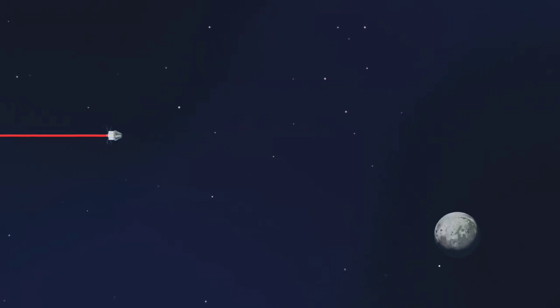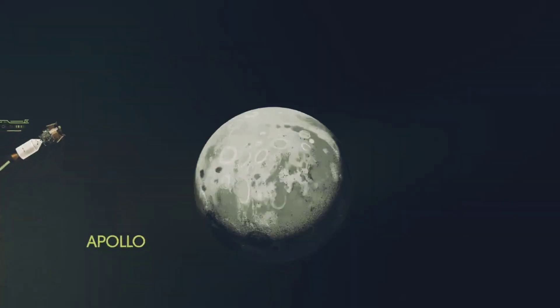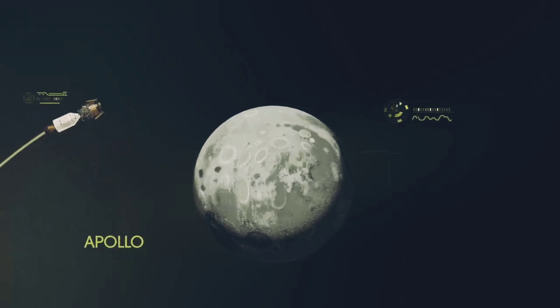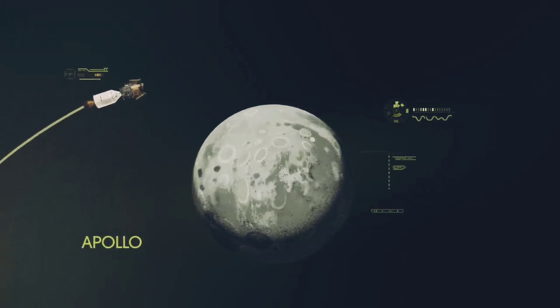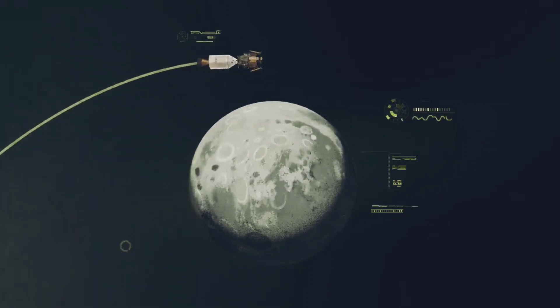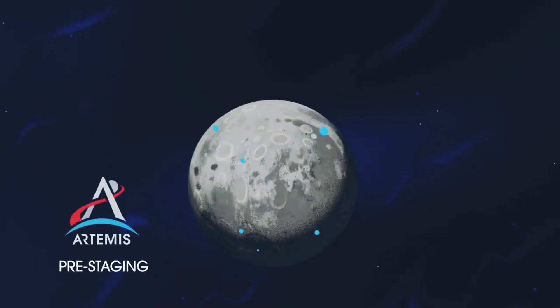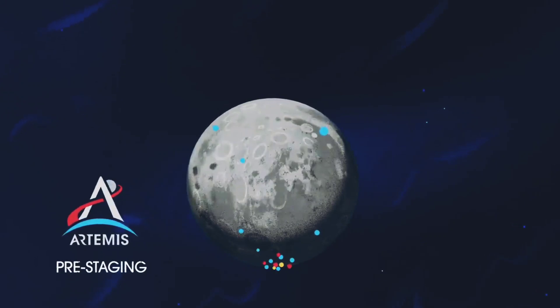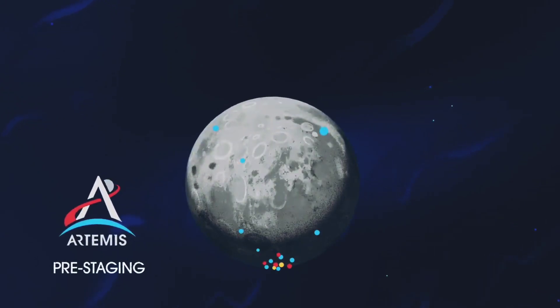Approaching the Moon, we see the fundamental differences between Artemis and Apollo. Instead of requiring Orion to serve as an expendable lunar command module or to carry a constrained lunar lander, the Artemis missions will take advantage of a different approach: pre-staging.